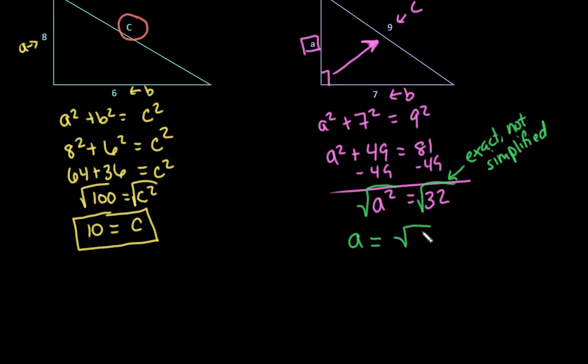So I could say that this is really 16 times 2 because 16 is a perfect square. 2 is prime, so I can't simplify that. So the square root of 16 would be 4, and 4 square root 2 would be the exact answer simplified.